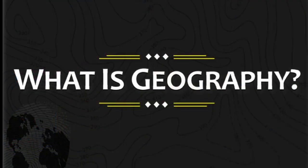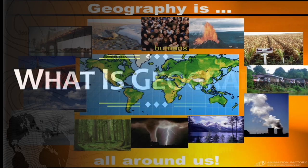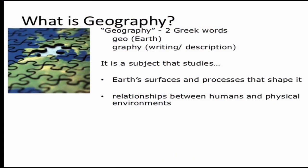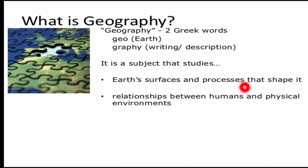Let's see the definition of geography. Geography is all around us — everything around in nature and the universe is geography. It is derived from two Greek words where 'geo' means earth and 'graphe' means writing or description. It is a subject that studies earth's surface and the processes that shape it, and the relationship between humans and the physical environment.